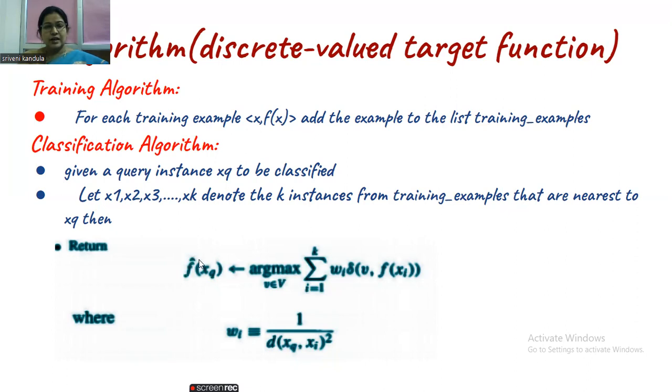After that, how we are calculating f̂(xq), our target function is argmax of v belongs to V. These are the set of values that we can take, sigma i=1 to k, wi×δ(v, f(xi)). This δ(v, f(xi)) we already worked out in KNN. If the value of v and f(xi) are the same, we give δ value as 1, otherwise 0. Here it's the same thing, but we are multiplying this δ value with wi, the weight. How do we calculate this weight is 1 by the distance squared. We will be calculating the distance, the same value we can use, but we do 1/d² which gives us the wi value.